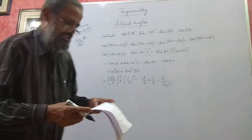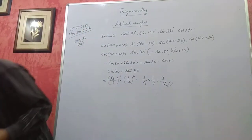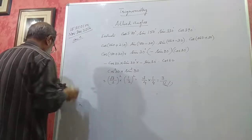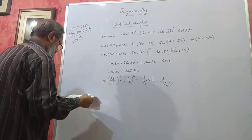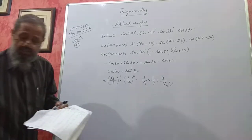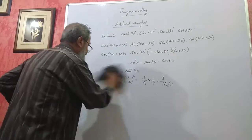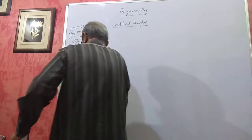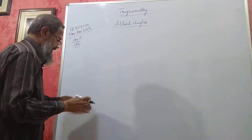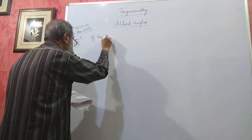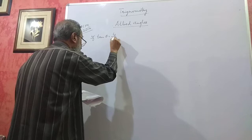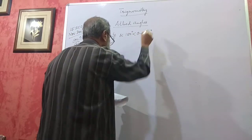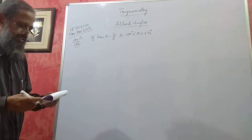Section C, same paper, problem number 30. If tan θ = 4/5 and 180° < θ < 270° — that means the angle θ is between 180° and 270°, that is, in the third quadrant.